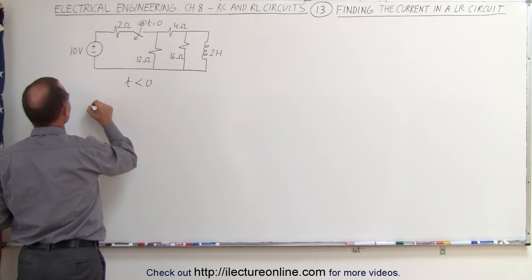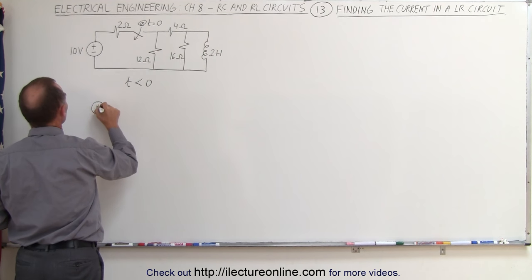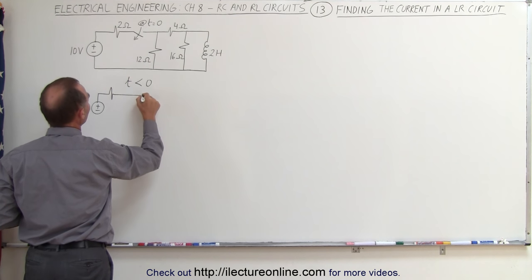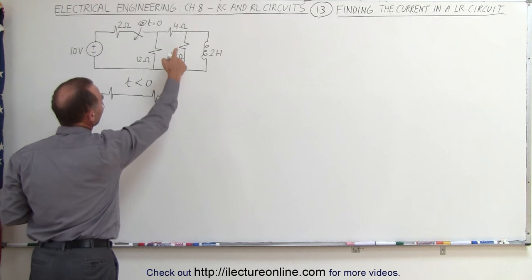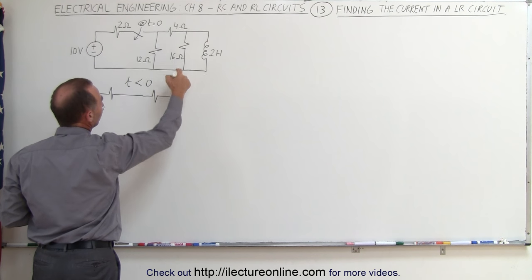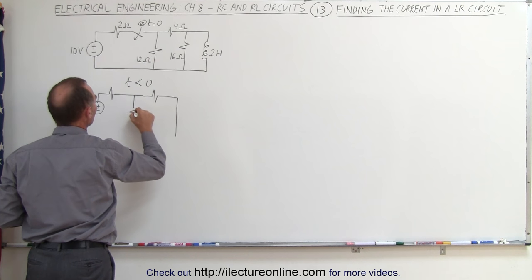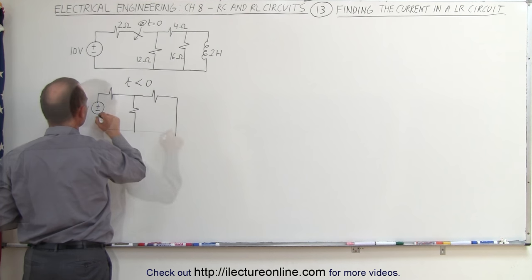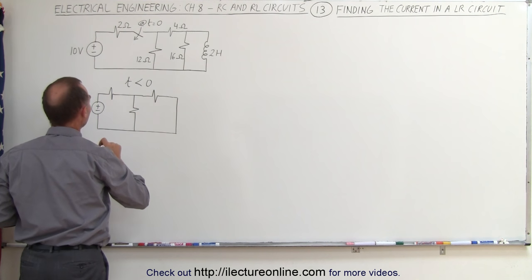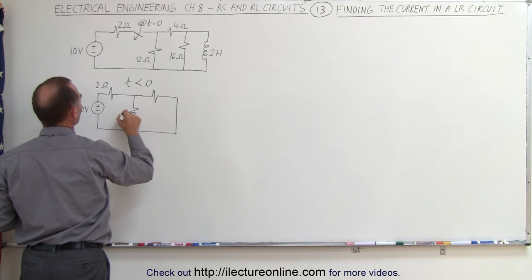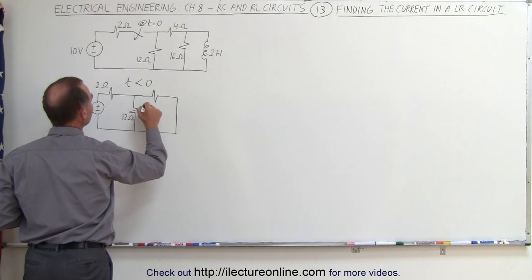We still have the 10 volt source, we have the 2 ohm resistor, we have the 4 ohm resistor. The 16 ohm resistor is gone, the inductor is a short, and we still have the 12 ohm resistor. So this is the 2 ohm resistor, this here is the 12 ohm resistor, and the 4 ohm resistor.